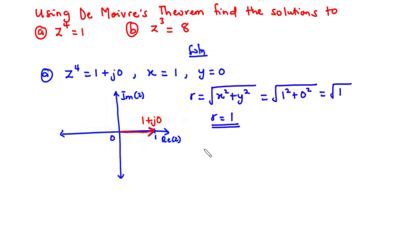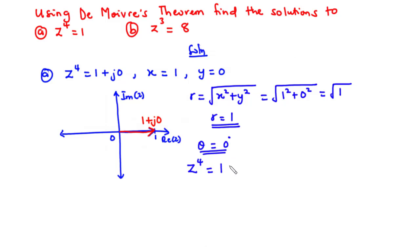Now let's find the value of the angle theta. Since 1 plus j0 lies on the positive x-axis, the angle between the complex number and the positive x-axis is 0 degrees. Therefore, the complex number z to the power 4, which equals 1 plus j0, can be represented in polar form as 1 at angle 0 degrees. Therefore, z to the power 4 equals 1∠0°.